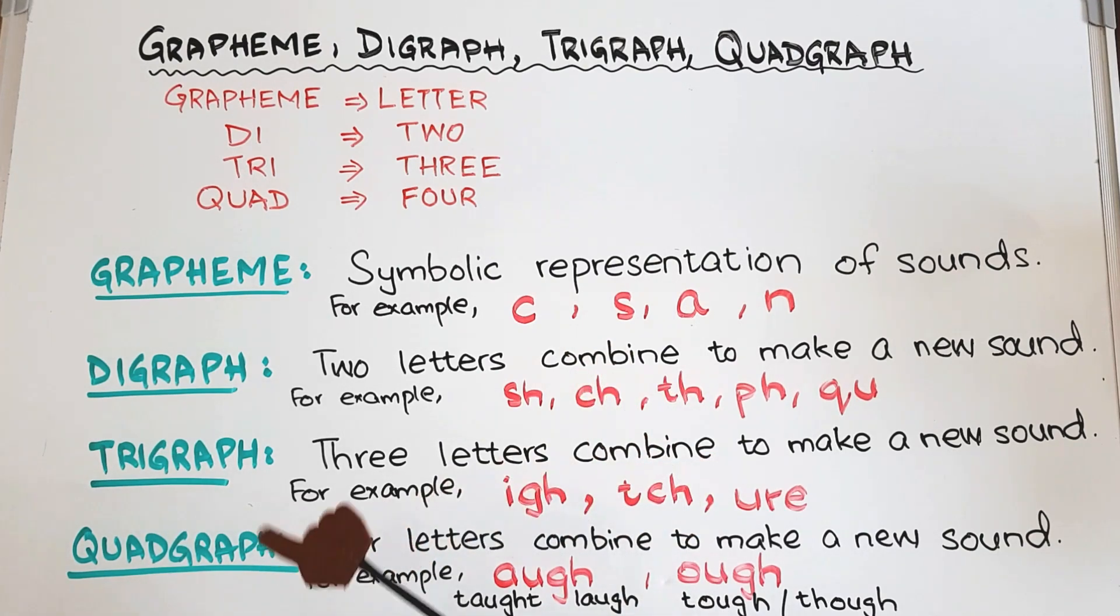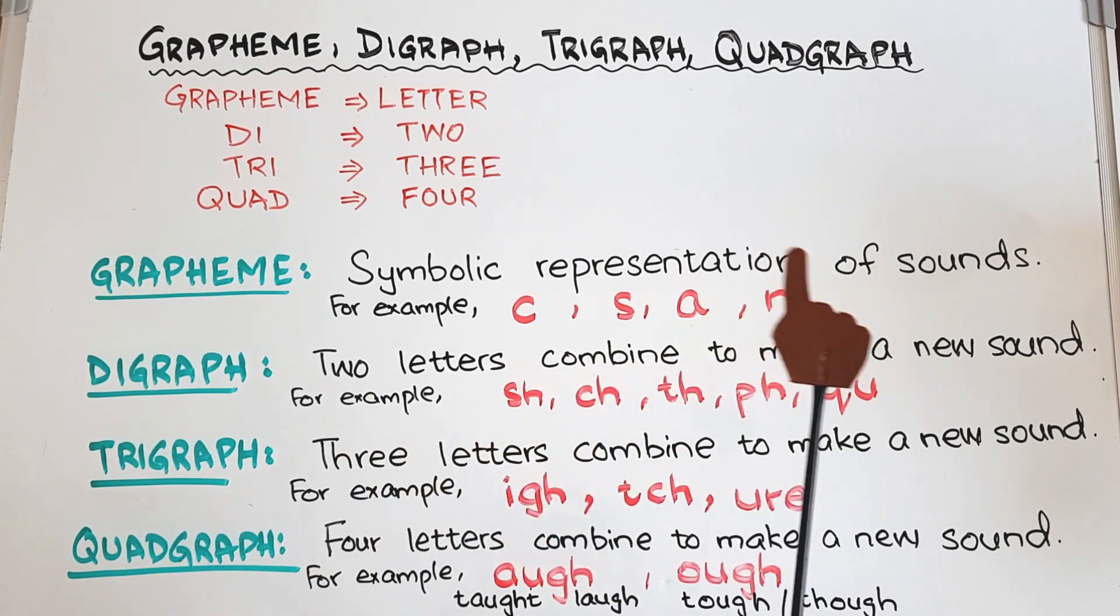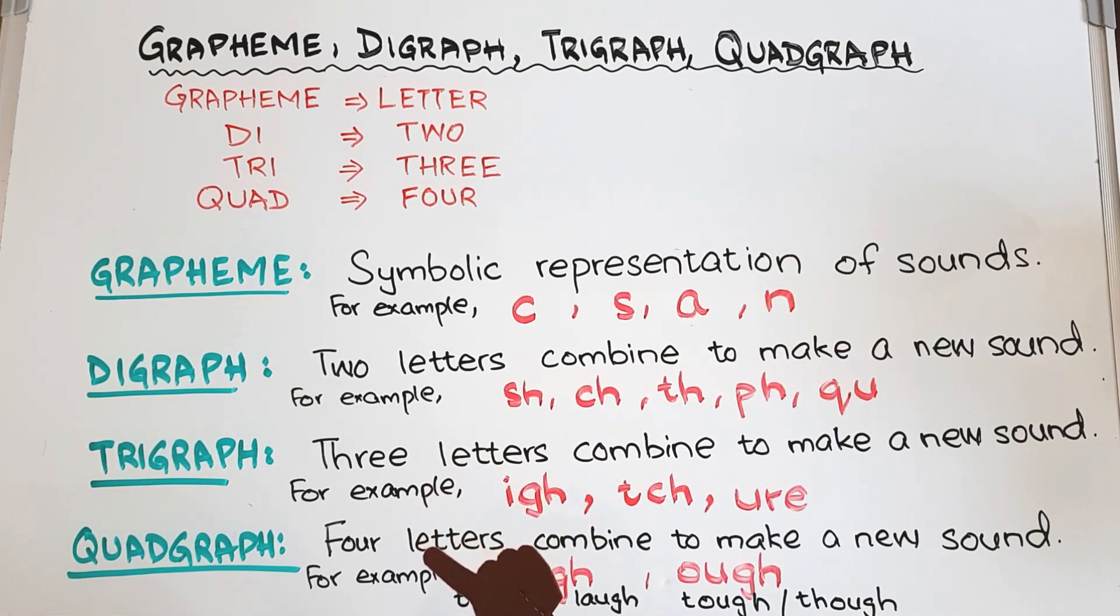The link is showing up there and I will also give it in the description box. The second one is OUGH, we also pronounce it as 'uff' like in tough and 'oh' like in though.